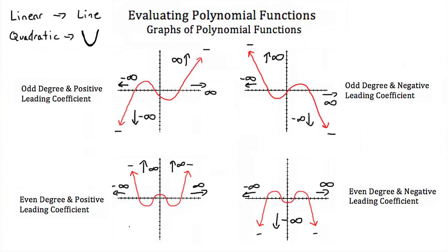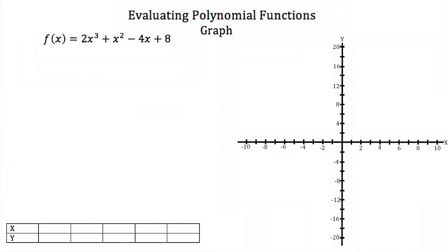So now that we know this, we can use it to help us see the shape of other polynomial functions. Let's graph f(x) = 2x³ + x² − 4x + 8. The first step is to find some points that lie on this graph. To do that, we select some x values: negative 2, negative 1, 0, 1, and 2.